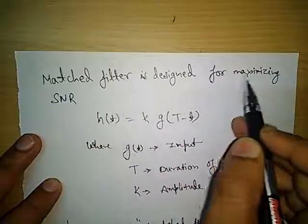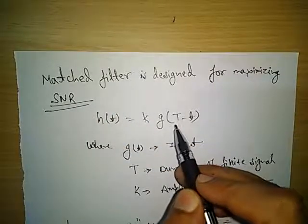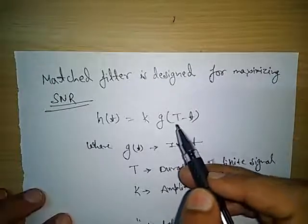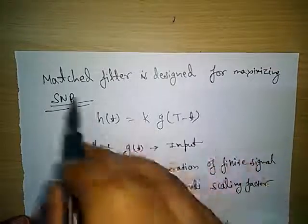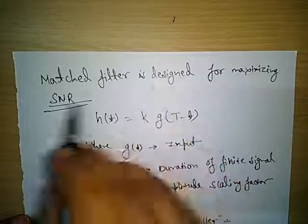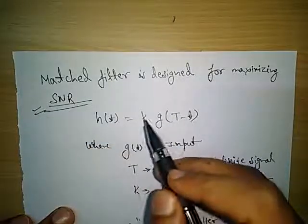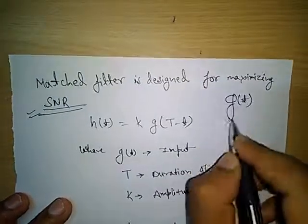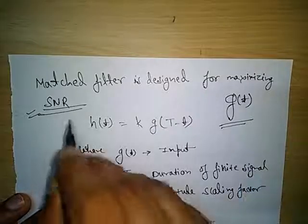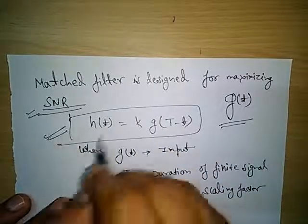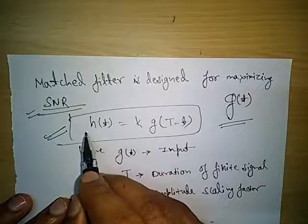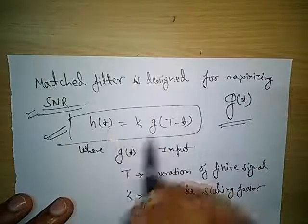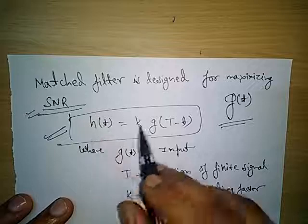Matched filter is designed for maximizing SNR — signal to noise ratio. This is the first question in the mind of students and everyone with experience. The answer is: it is designed for maximizing SNR. If there is an input signal g(t), we have to design a filter which has a transfer function — in time domain, the impulse response like this.